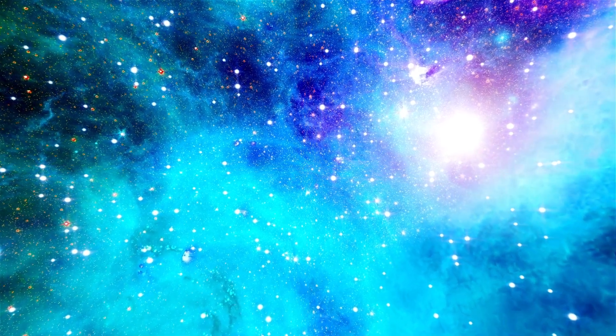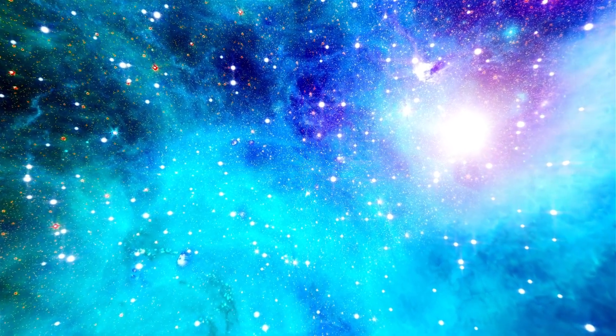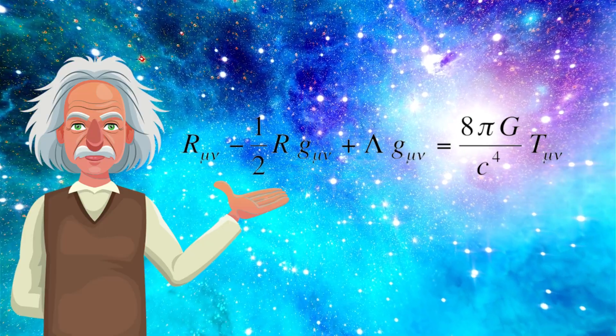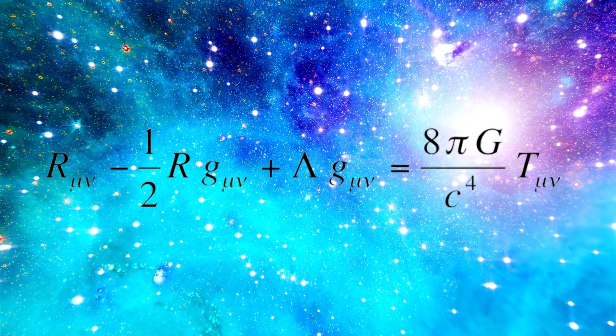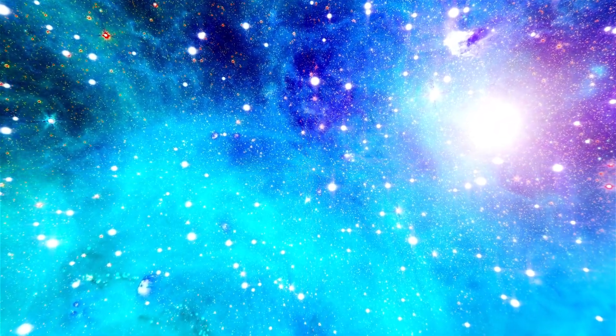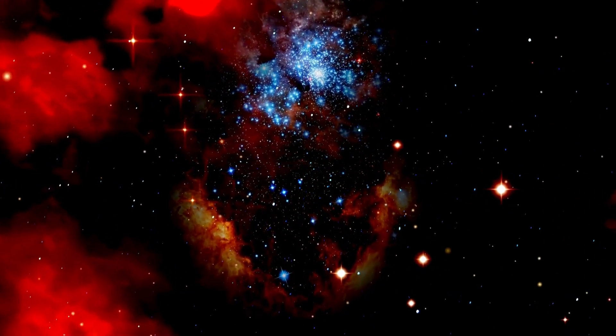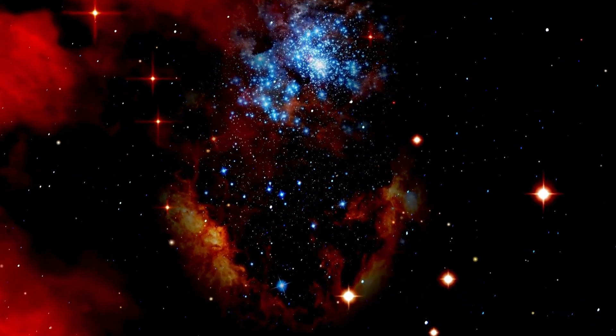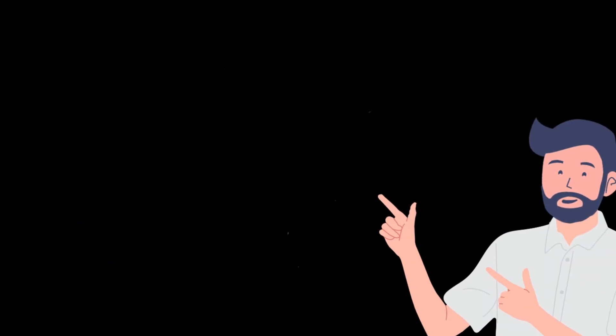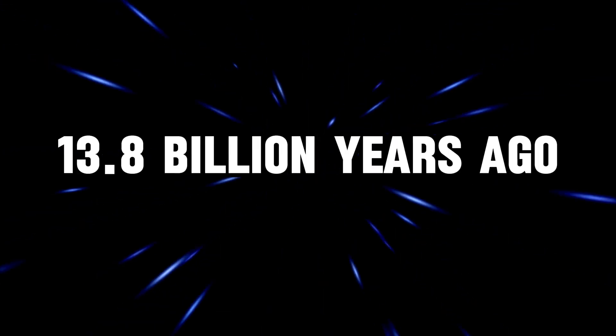Based on observations, we know the universe is expanding. Using these observations and Einstein's equations, we can delve into the distant past and understand what transpired. As the universe expands, logic dictates that matter was once denser. Tracing the equations backward reveals a continuous increase in matter density, approaching infinity. This infinite density occurs at a specific point in time, roughly 13.8 billion years ago, and is what we call the Big Bang.